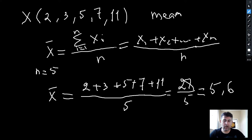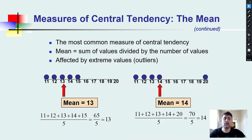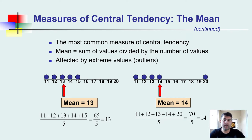That sum is 28, divided by 5, giving us an arithmetic mean of 5.6. You can try other examples and easily calculate any mean. Now let's look at another characteristic of the mean. The mean is the most common measure of central tendency — it is the sum of values divided by the number of values, as we verified in our formula and example. However, the mean is affected by extreme values.